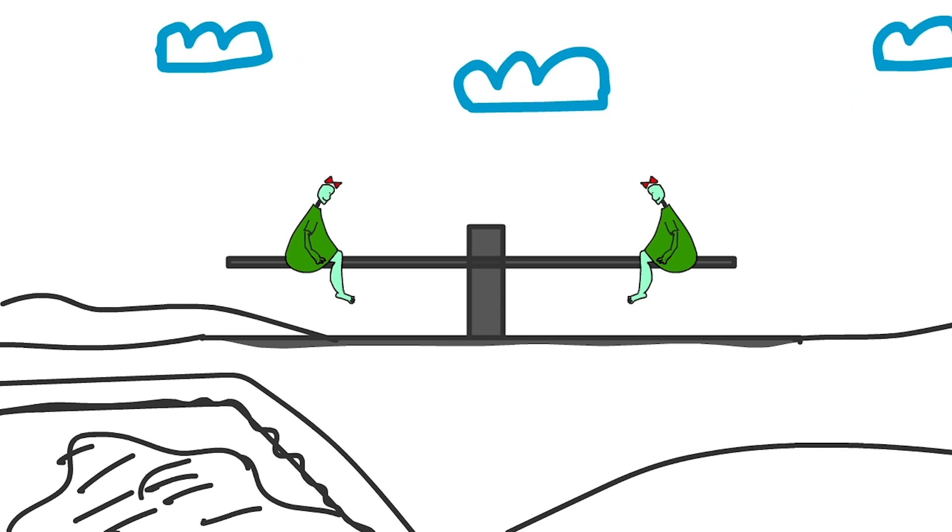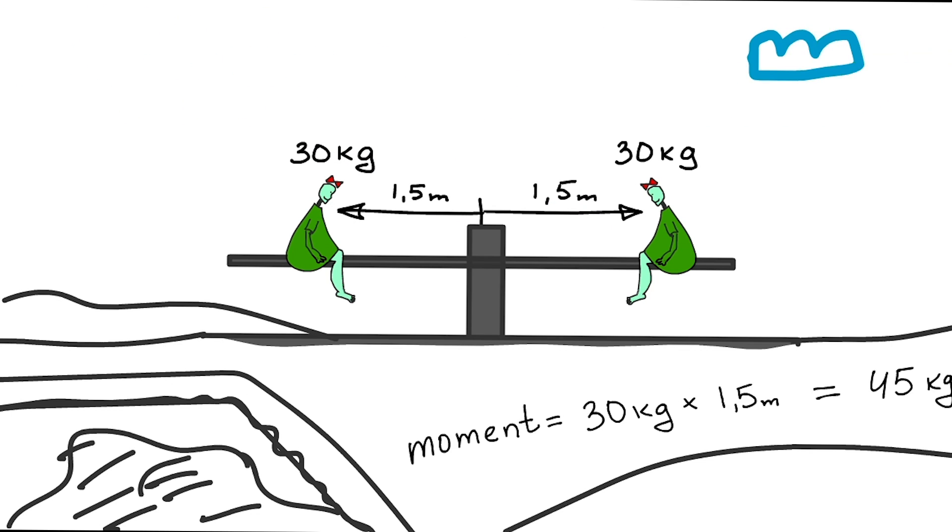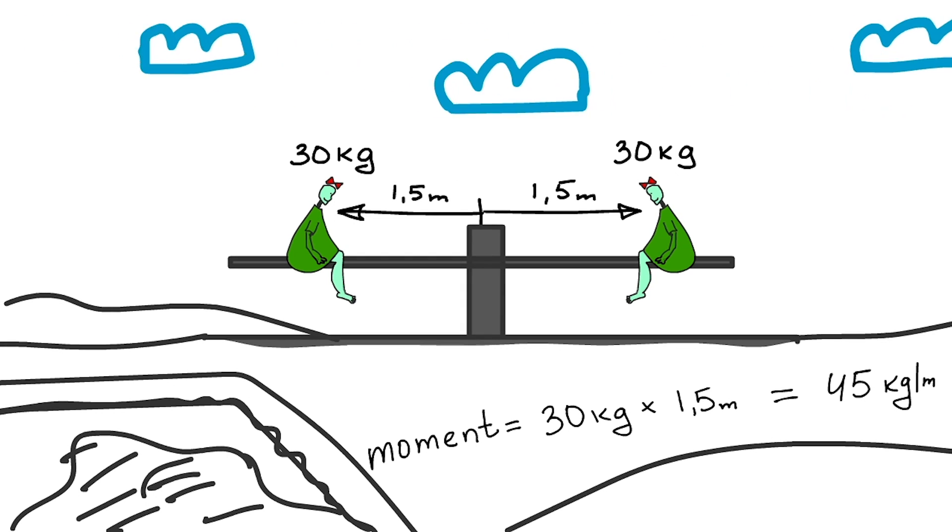Please look at those two kids on the swing. They have the same weight, about 30 kilos. Both of them are sitting at a distance of one and a half meters from the center of the swing. The center of the swing is the reference point here. To calculate the moment created by those kids, we need to multiply their weight by the lever. As you see, both of them are creating the same moment. That's why the swing is in balanced position now.